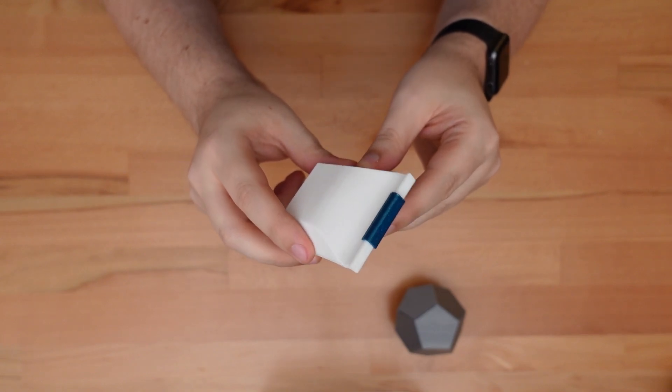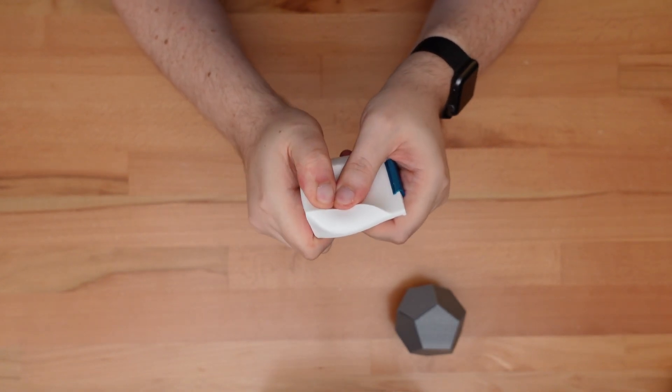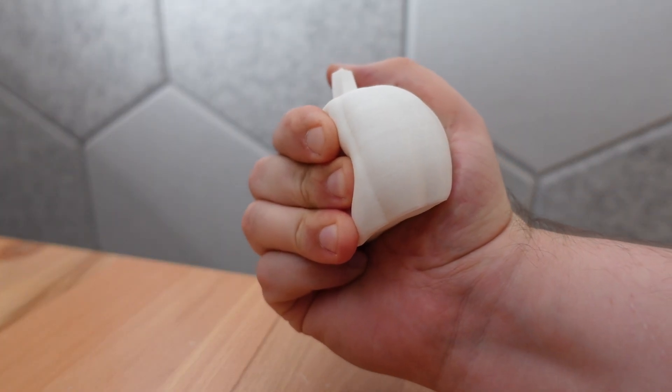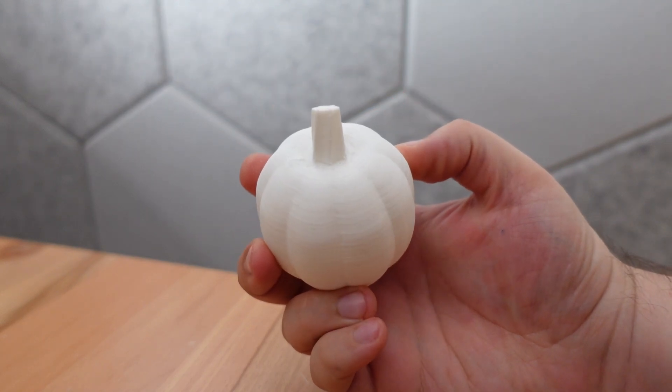This next container is the Flexi purse. This squishy design is printed in TPU, a flexible filament that I haven't used nearly as often as I'd like. But it's a lot of fun.